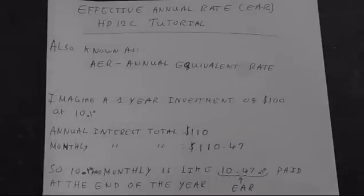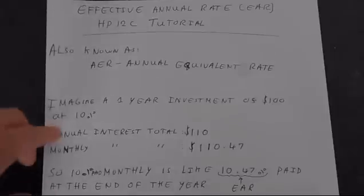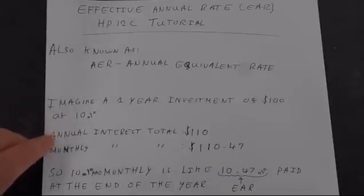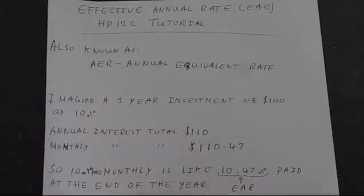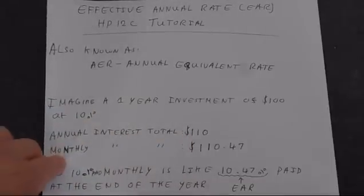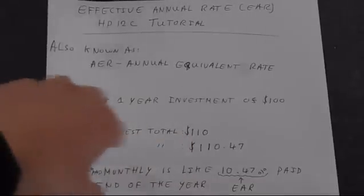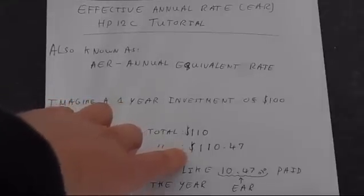If we imagine that you put $100 in the bank for one year at 10%. At the end of the year, you would have $110 if that was paid at the end of the year, or if your interest was compounding monthly, then you would have $110.47.